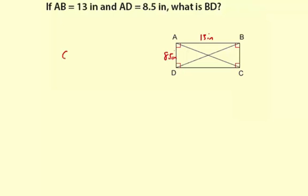So it's going to be C squared equals A squared plus B squared. So I'm going to say BD squared equals, and I'll let A be represented by the short side, so 8.5 squared, and then plus B squared, which is going to be the 13 squared.